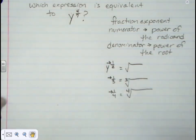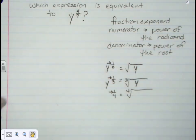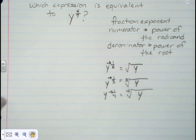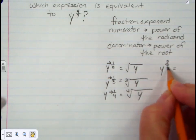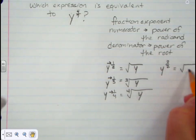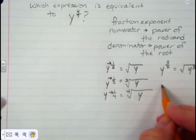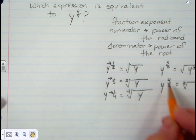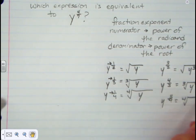If I had y to the one-half power, that would be the square root of y. Y to the one-third would be the cubed root of y. Y to the one-fourth would be the fourth root of y. If the numerator is not 1 — like y to the three-halves — that becomes the square root, but y is to the third power. And y to the four-thirds: the 3 in the denominator indicates the third root, and the 4 is the power of y. Y to the five-fourths would be the fourth root of y to the fifth.